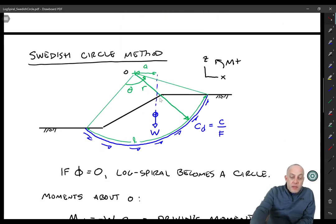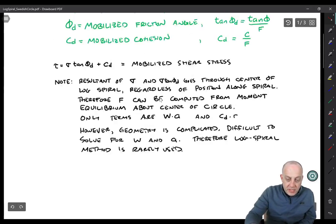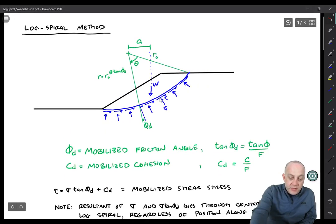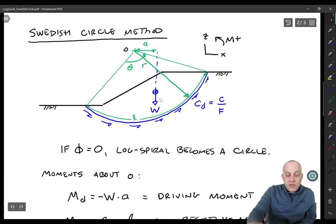Now let's take a look at what happens if we have phi equals zero. So phi sub d would be equal to zero. If phi is equal to zero, then you just get r is equal to r zero. That's the equation of a circle. And it reduces to the Swedish circle method.